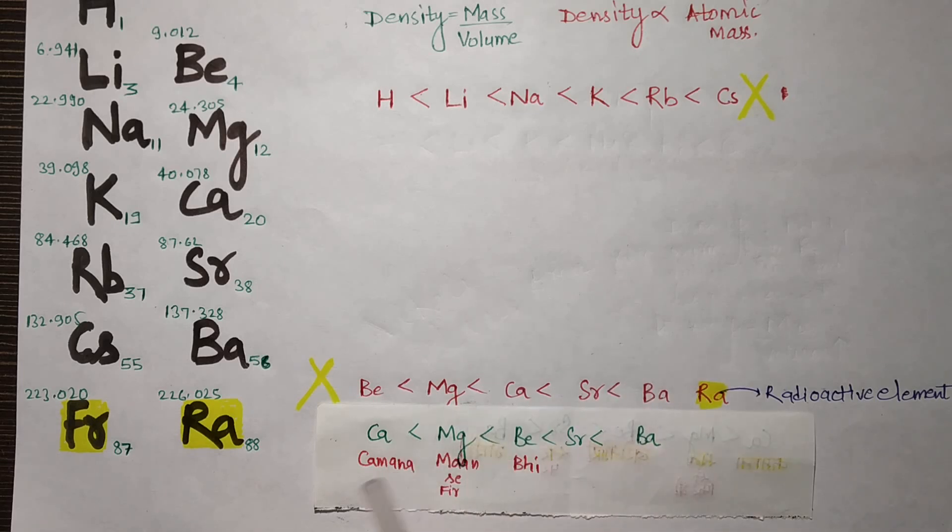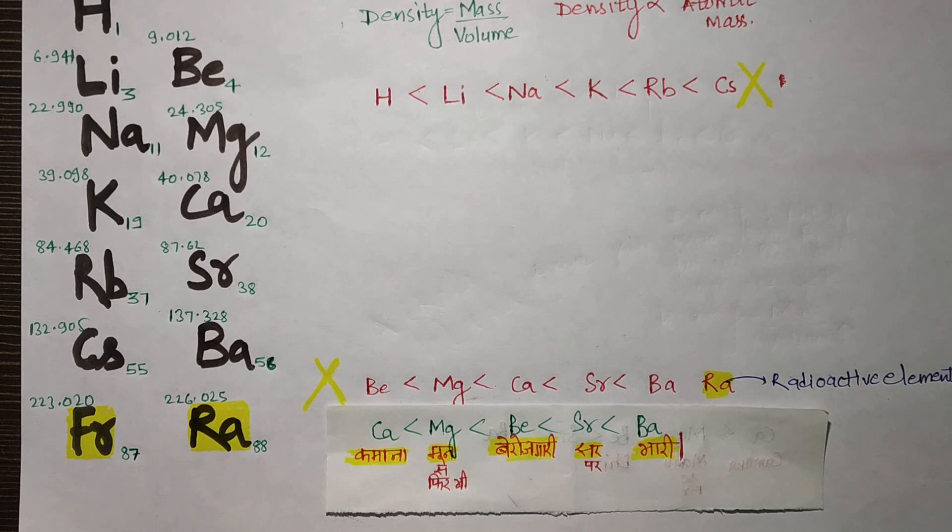What is actually happening is that calcium's density is less than magnesium's density. The density of calcium is less than magnesium, less than beryllium, less than strontium. The entire order is rearranged.